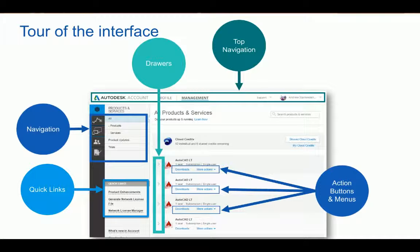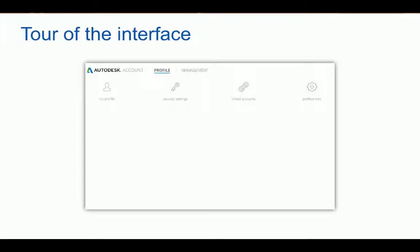The profile page is where you can manage your user information and is divided into four subcategories. First, My Profile allows an administrator or user to add personal information like a short biography, professional information, or an address. A quick note on the address: this would be a personal address, and updating this will not change the overall company or shipping address. To update the shipping address in the system of record, the administrator would have to contact their reseller or Autodesk customer service for any changes.